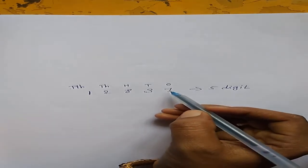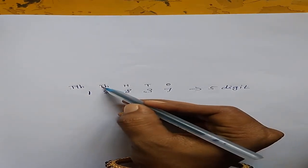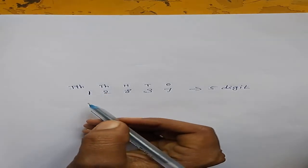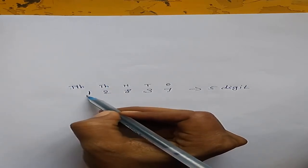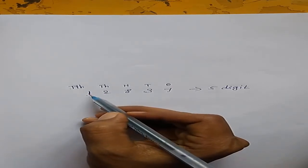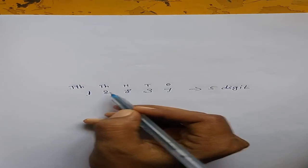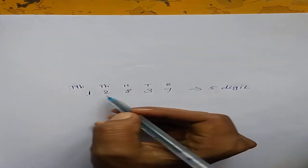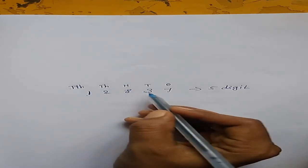Once again I say the place values: 1st place is ones, 10th place is hundreds, 1,000 place is ten-thousands. Now read the number. These 2 digits are in the thousands family, so join them and read: 12,000. The full number is 12,837.